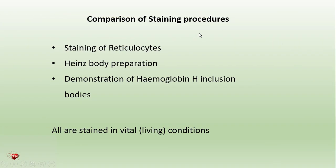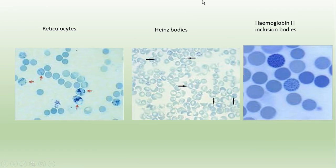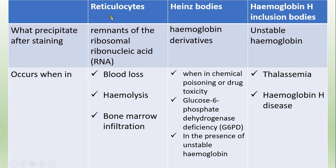Today I am going to compare the staining procedures of reticulocytes, Heinz bodies, and hemoglobin H inclusion bodies. All three staining procedures are done in vital conditions, that means in living conditions. This is a photograph of reticulocytes — you can see the reticulocytes precipitated inside the red cell. These are Heinz bodies, and this is a picture of hemoglobin H inclusion bodies.